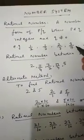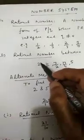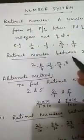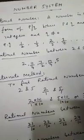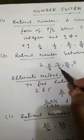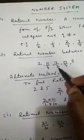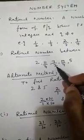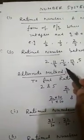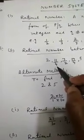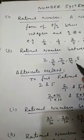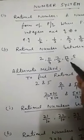We have also learned how to find rational numbers between 2 and 5. Between 2 and 5 we get 2 plus 5 divided by 2, that is 7 by 2. Again, between 2 and 7 by 2 we get 11 by 4, and between 7 by 2 and 5 we get 17 by 4.